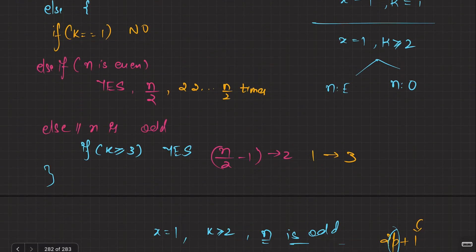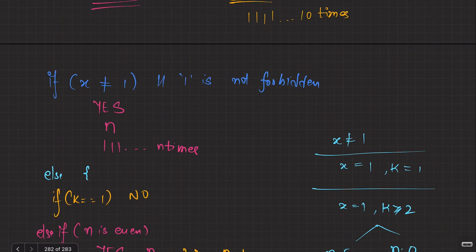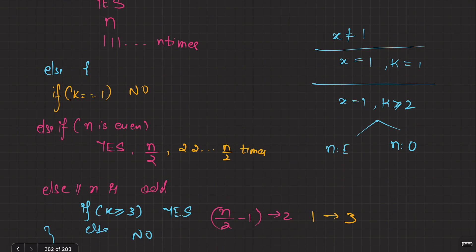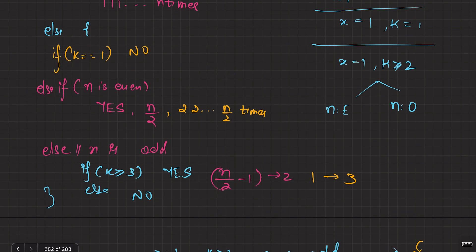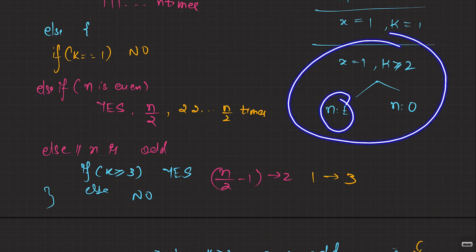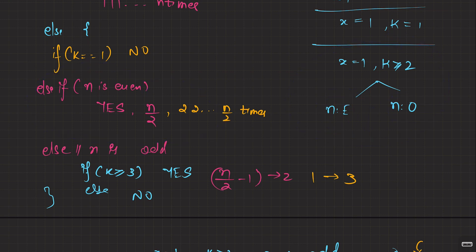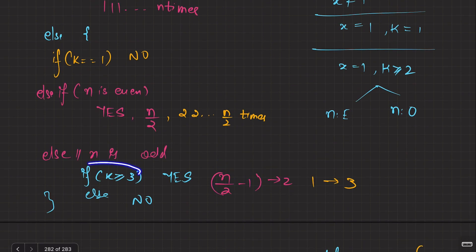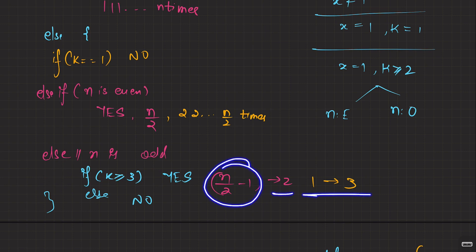Otherwise it's no. Let me summarize: first, if 1 is not forbidden, always print yes and n ones. If 1 is forbidden and k equals 1, print no. If 1 is forbidden and k ≥ 2, and n is even, print yes with n/2 twos. If n is odd and k ≥ 3, print yes with (n/2 - 1) twos and one 3. Otherwise print no.